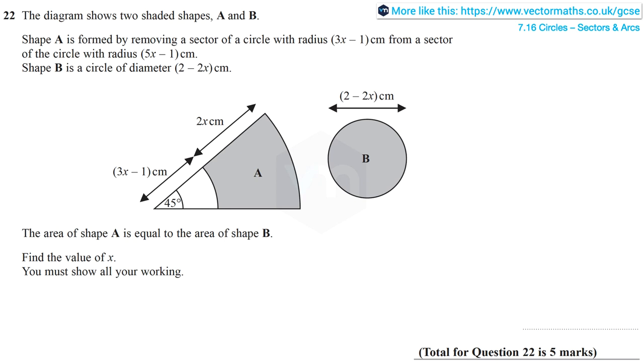Now, an expression for the area of A is given by 45 over 360 times pi times 5x minus 1 all squared, subtract 45 over 360 times pi times 3x minus 1 all squared, because it's the difference between the areas of sectors with radius 5x minus 1 and radius 3x minus 1. Also, the area of B is equal to pi times 1 minus x all squared, because the radius of course is half the diameter.